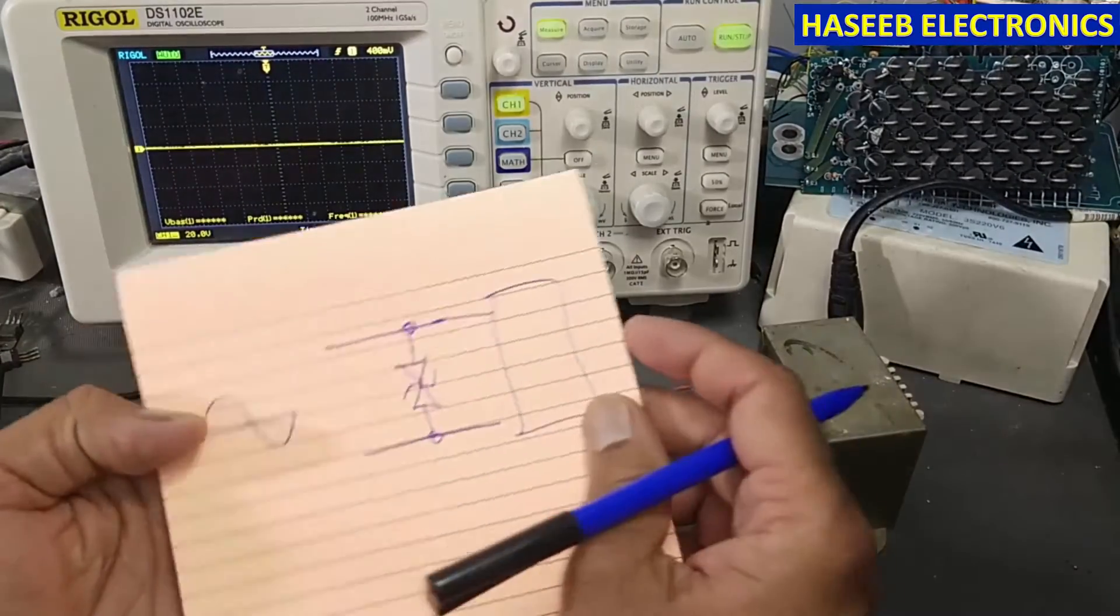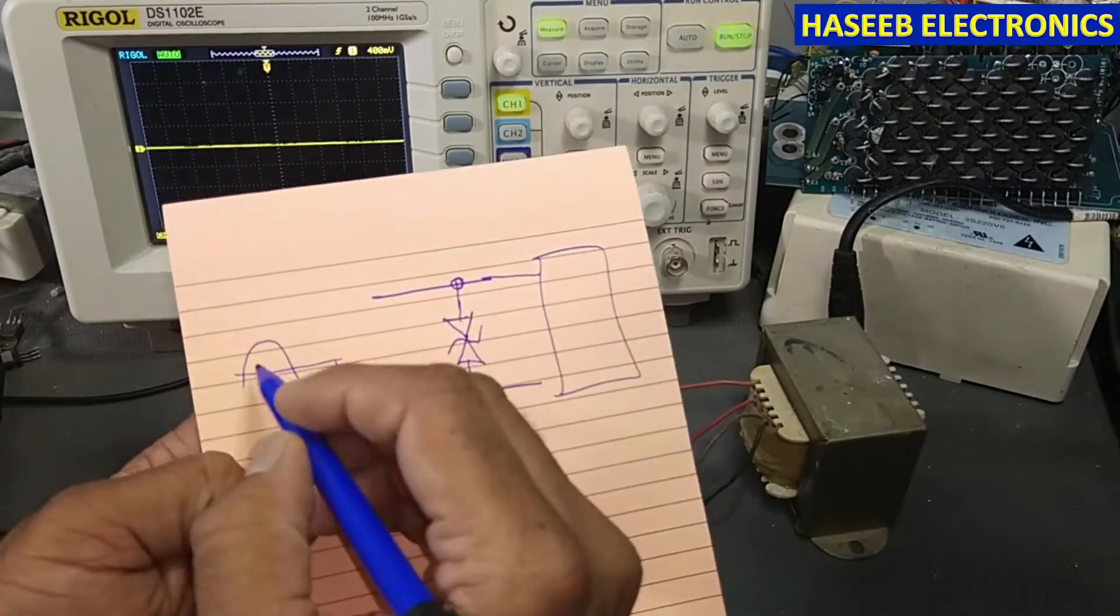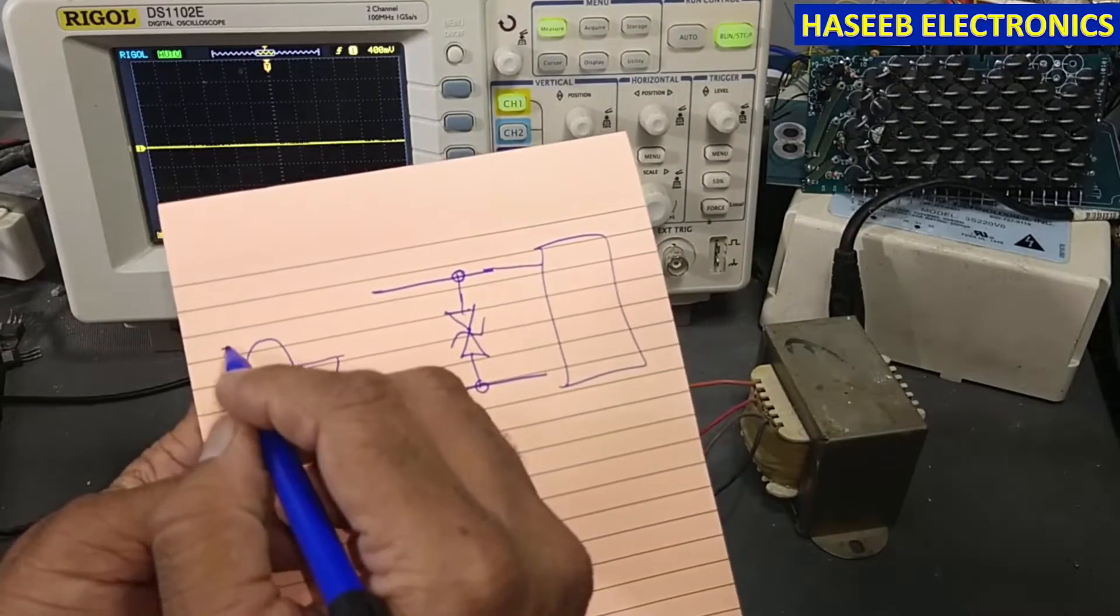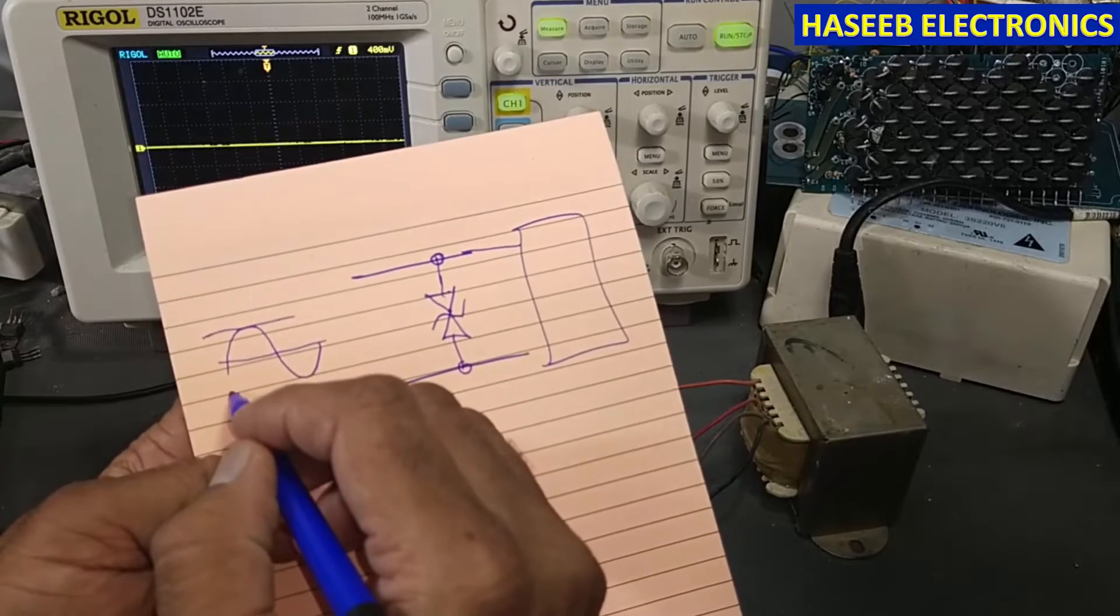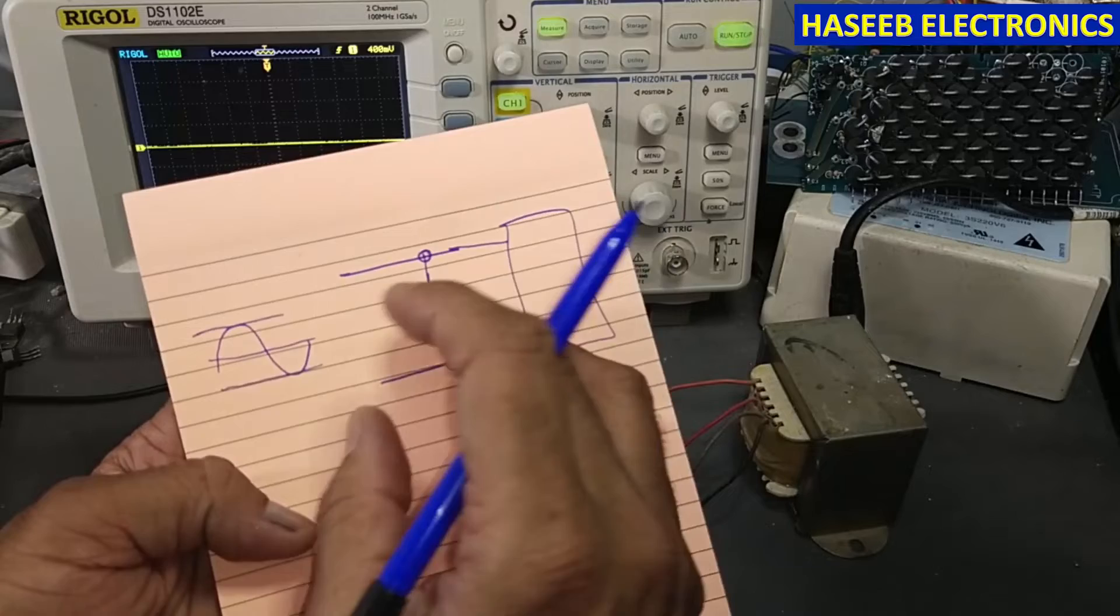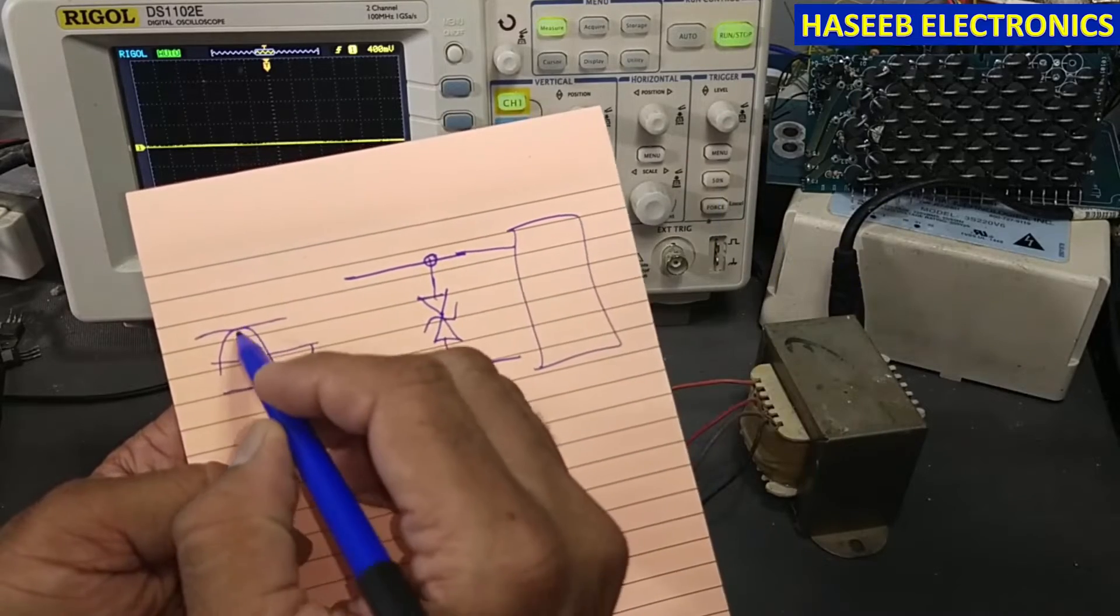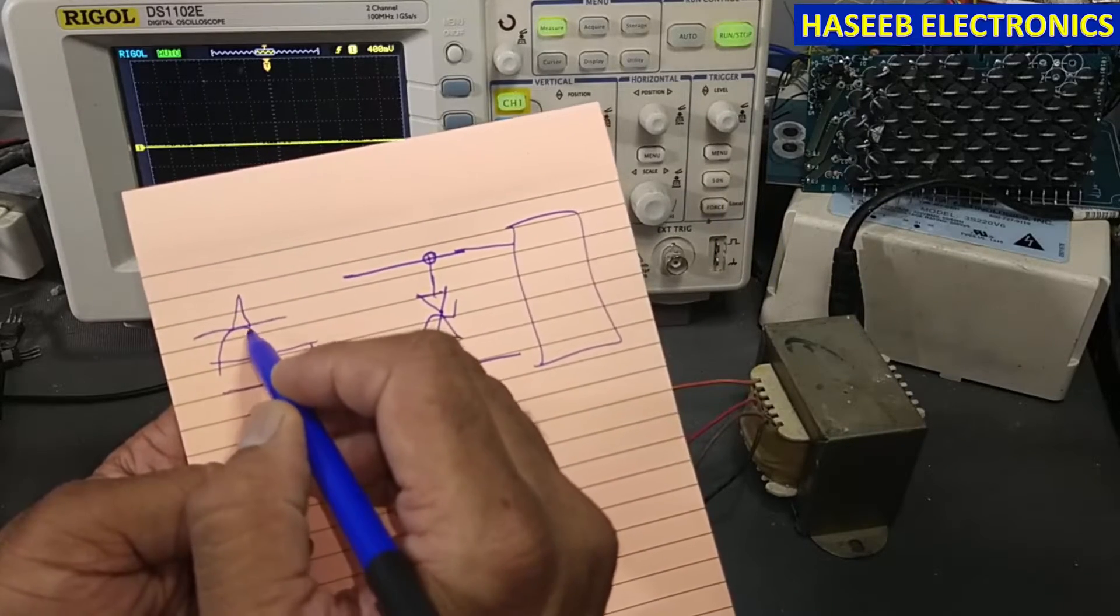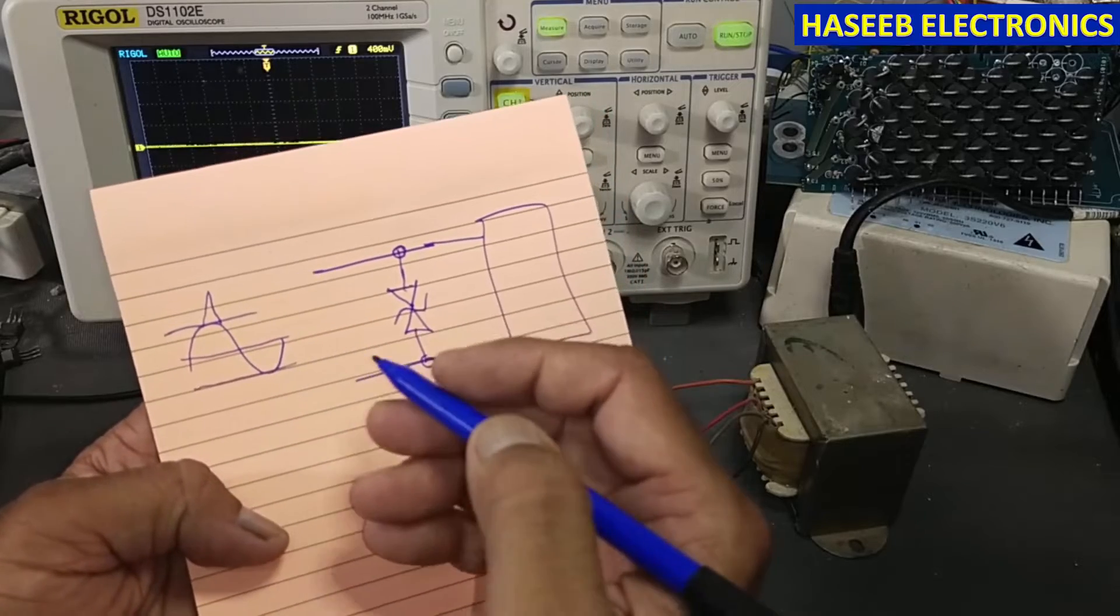It will regulate at 22 volts. We can say the maximum breakdown voltage is 26 volts. Above 26 volts, if any spike, pulse, or any kind of voltage comes, it will clip off.